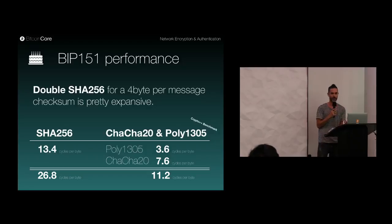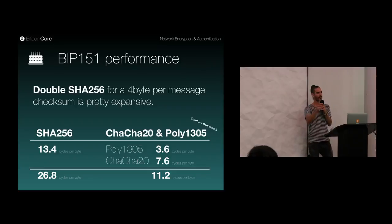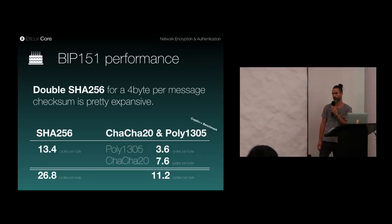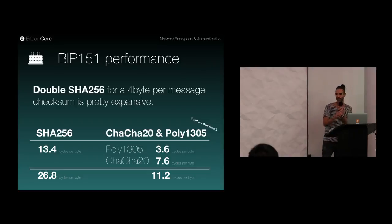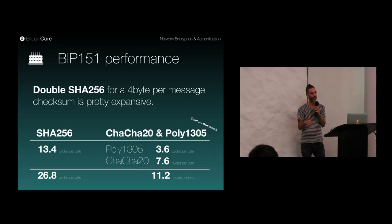You might ask about performance, because encryption is thought to slow you down. But consider that every Bitcoin package currently does a double-round SHA-256 on the whole package to get a 4-byte checksum — quite expensive. The Crypto++ benchmark states 13.4 cycles per byte for SHA-256, which means 26.8 cycles for a double pass. ChaCha20-Poly1305 is significantly faster, so it may even be faster to use the encryption approach.